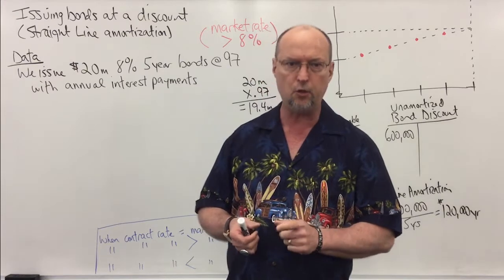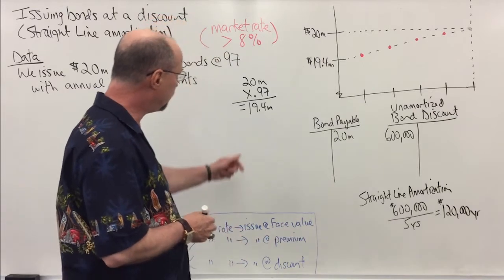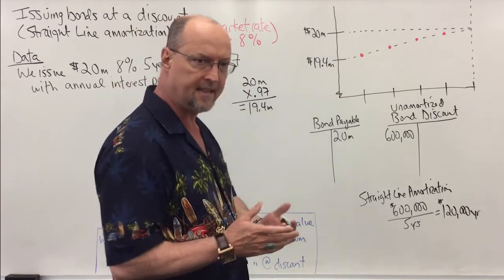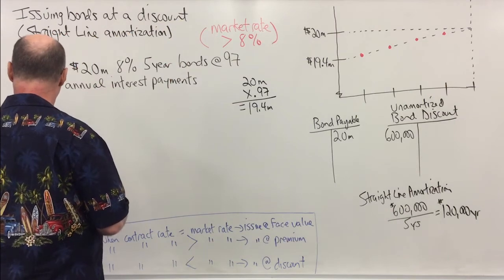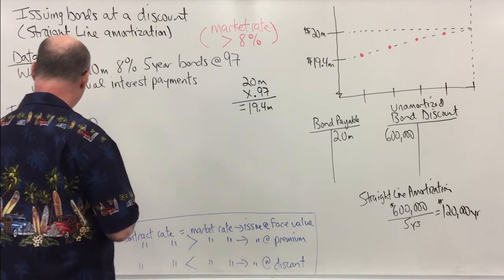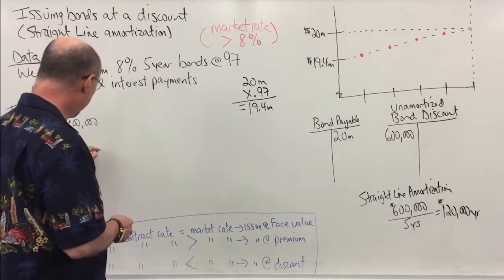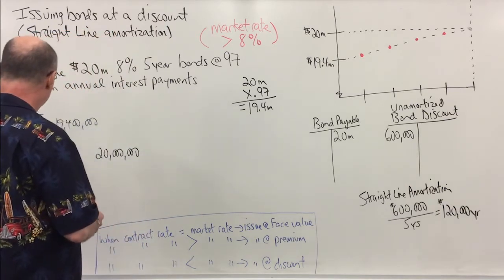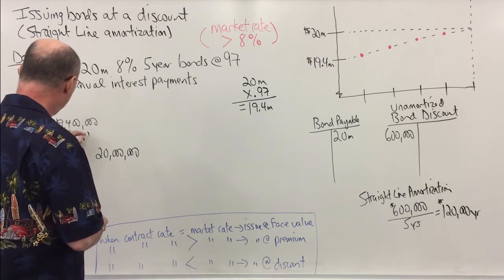Okay, so if we issue bonds at 97 or 97% of face value, then what that means is we're going to raise $19.4 million cash. So on the day that we issue the bonds, we're going to debit cash for $19 million four hundred thousand. Now we always credit bonds payable—I'm going to abbreviate BP, bonds payable—at face value, and that means that we're going to have an unamortized bond discount of $600,000.